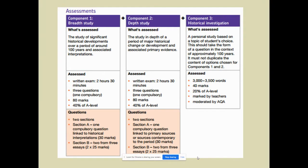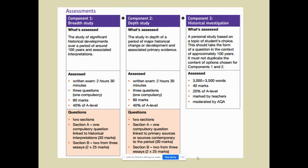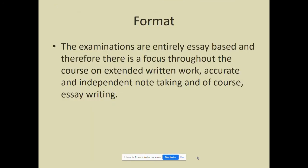The assessment is very straightforward. There are two exams, one for the British course and one for the American course. There are three essays on each exam. They're worth 40% each, so a total of 80%, and the historical investigation on the French Revolution is worth 20% of the final mark. The format of the course is essay-based, and so there's an obvious focus on extended written work, on accurate and independent note-taking, and, of course, essay writing.